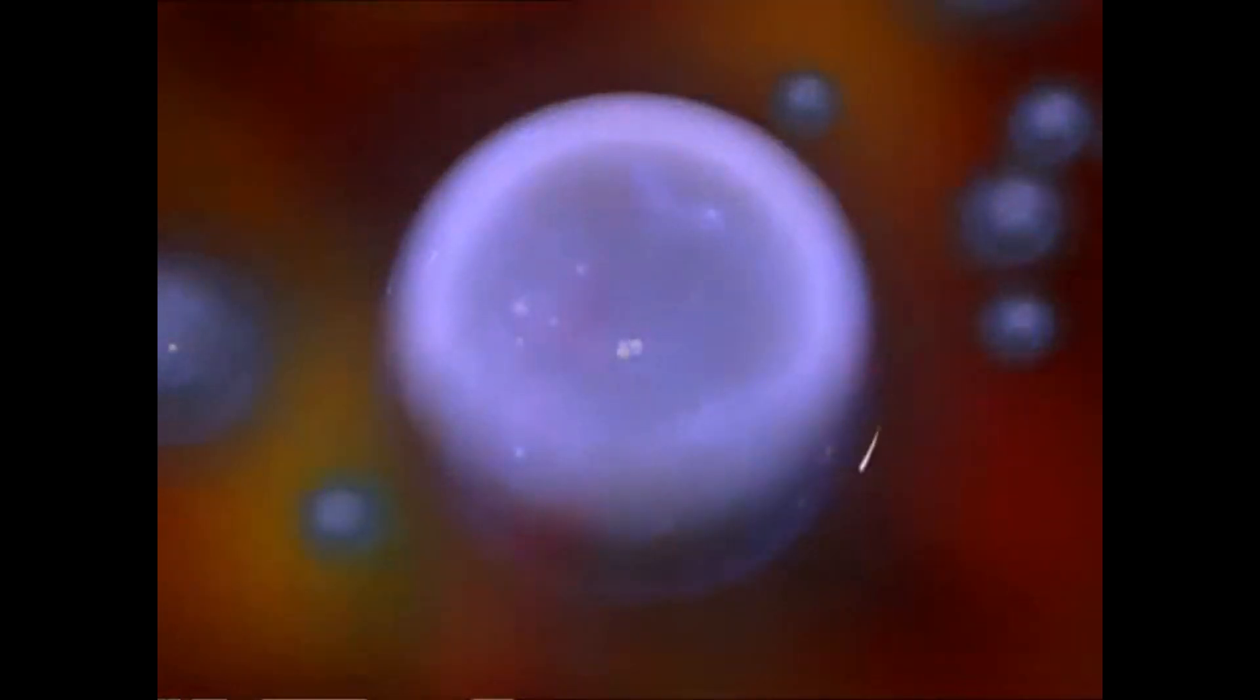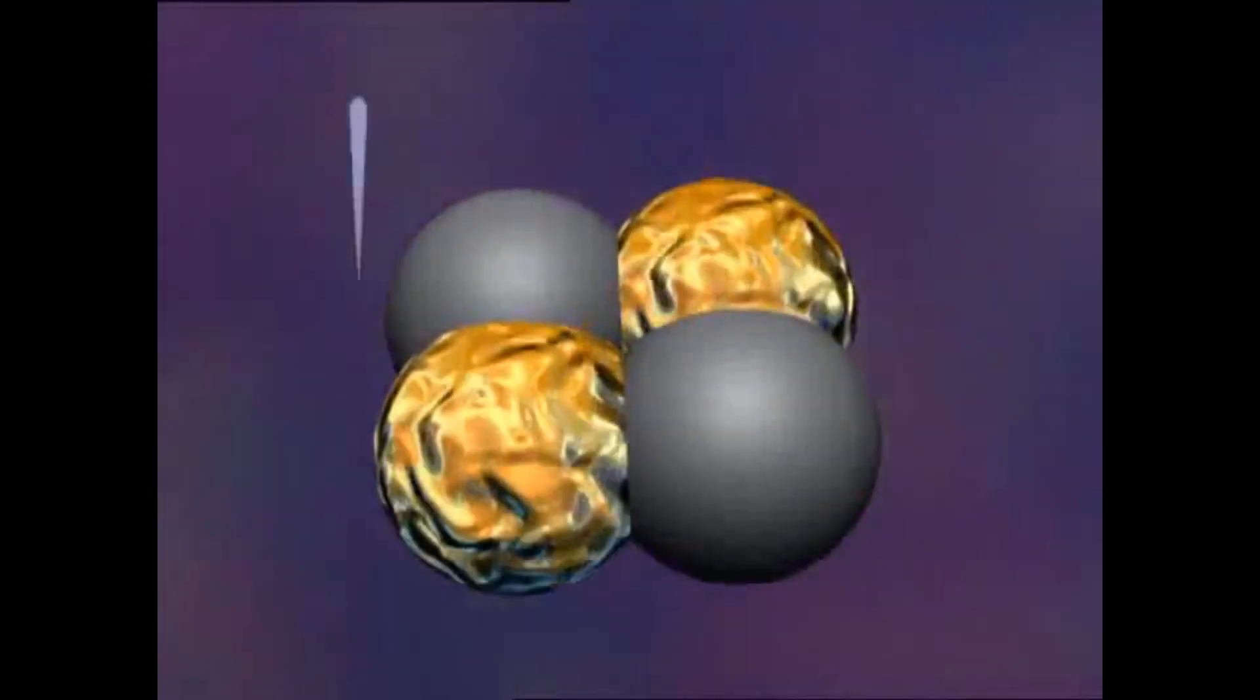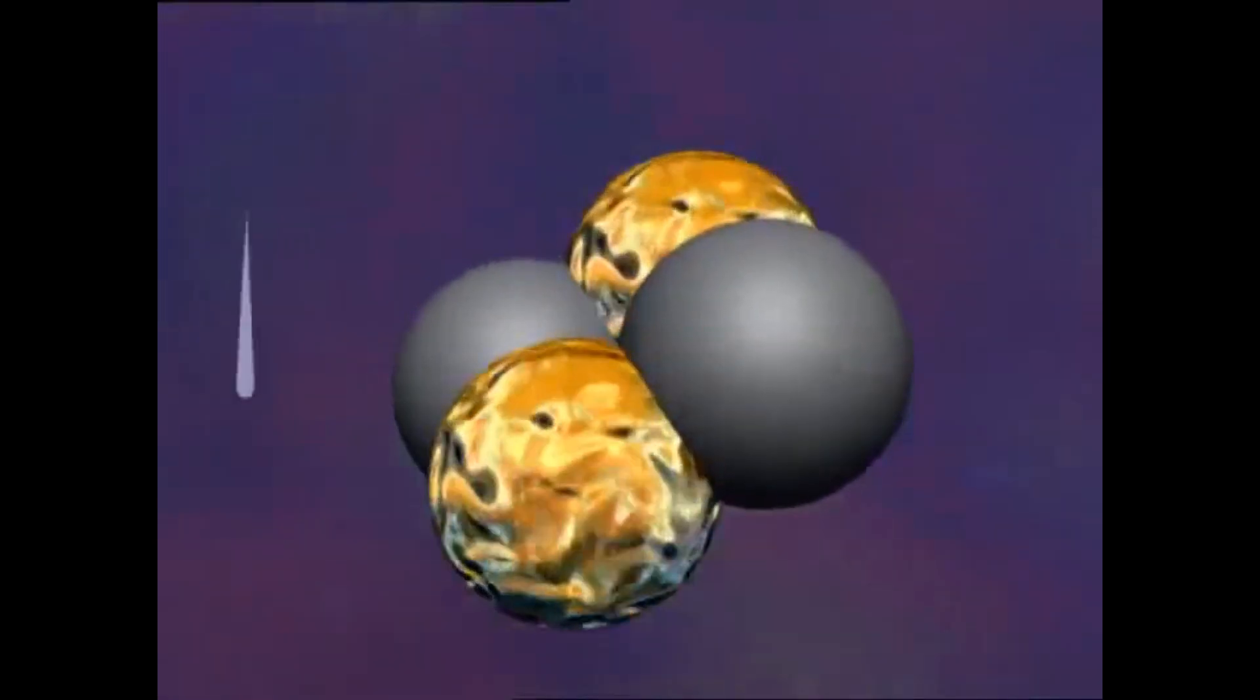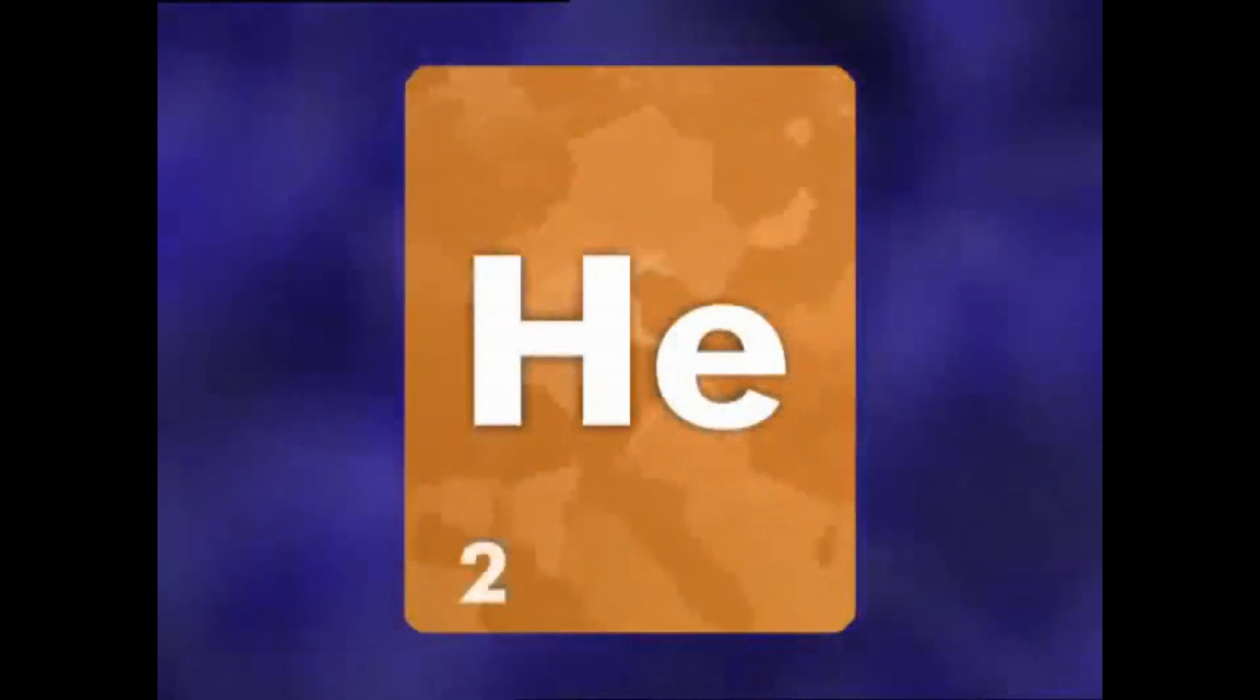Helium has two electrons orbiting around the outside. In the nucleus, there are two protons and two neutrons. The atomic number is simply the number of protons. So the atomic number of helium is two.